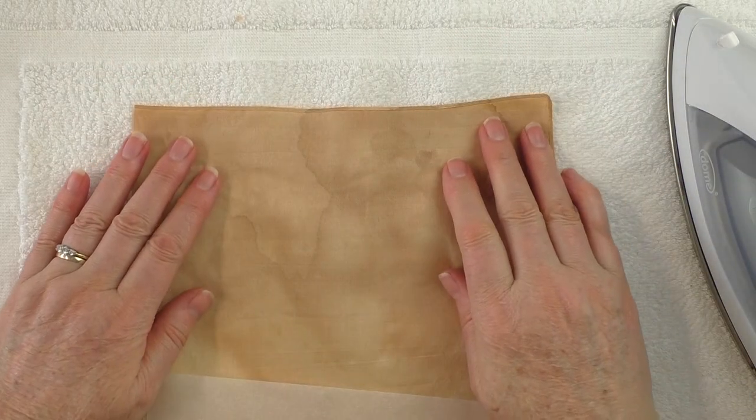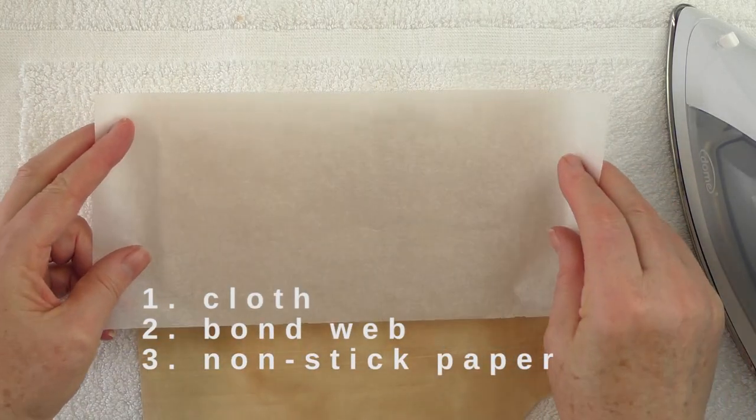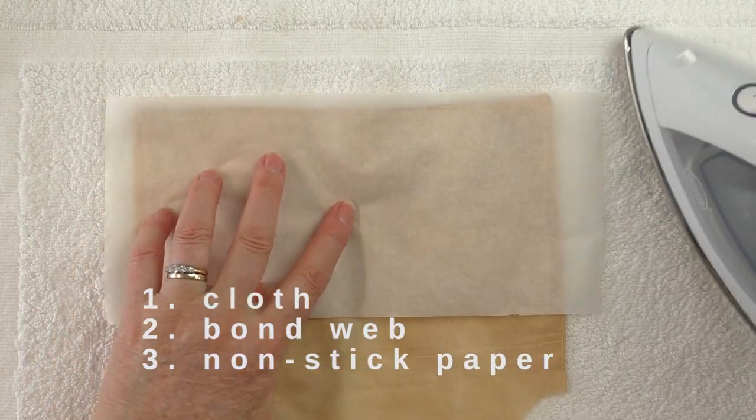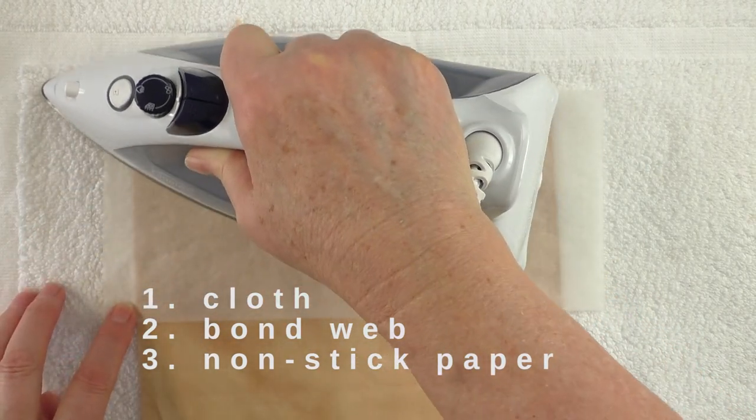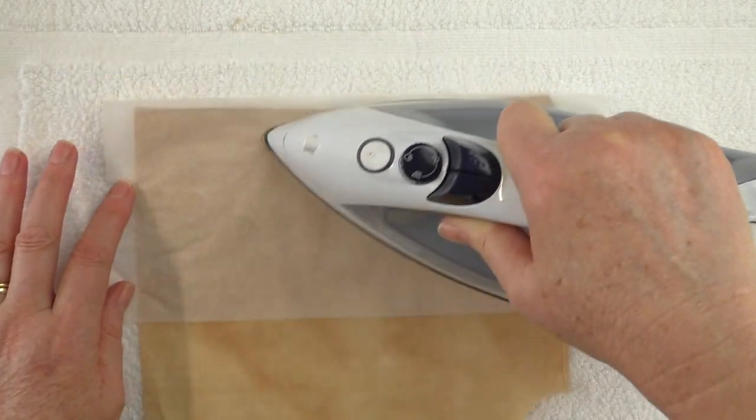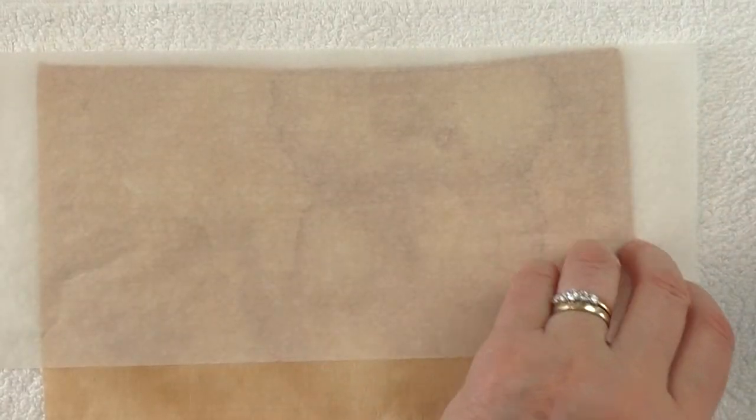So cloth down, the webbing on the top, the paper that comes with the webbing over that, and just press that on. It doesn't take much to heat set it on, because it's very thin. It's not a thick fuse.